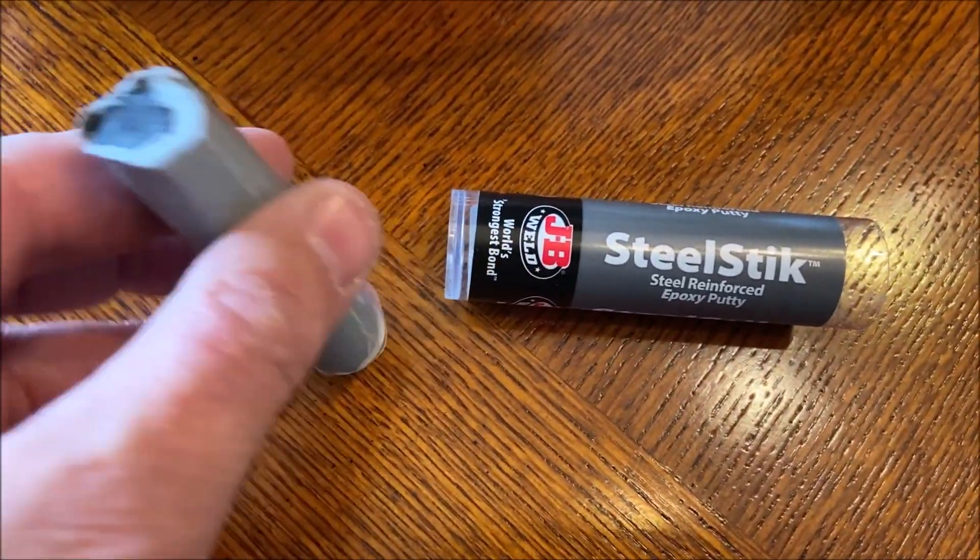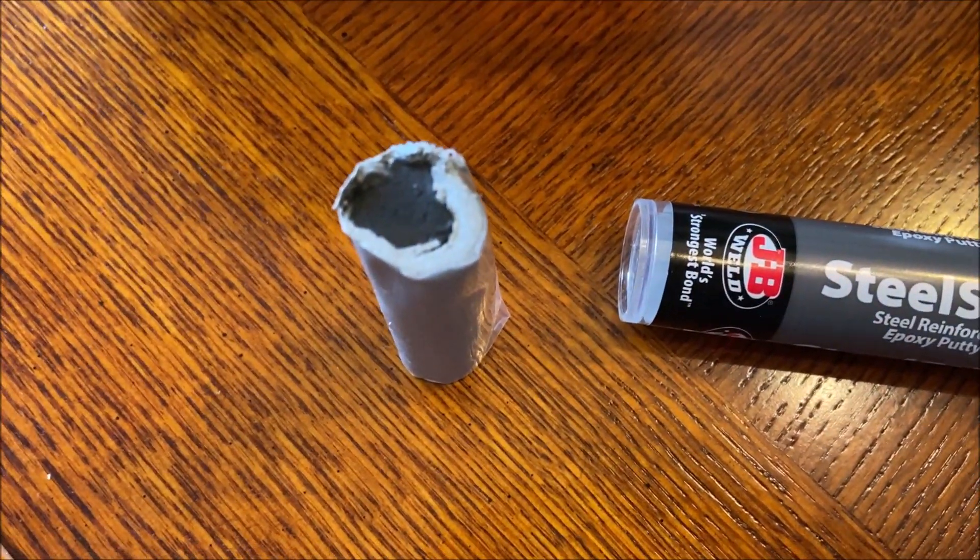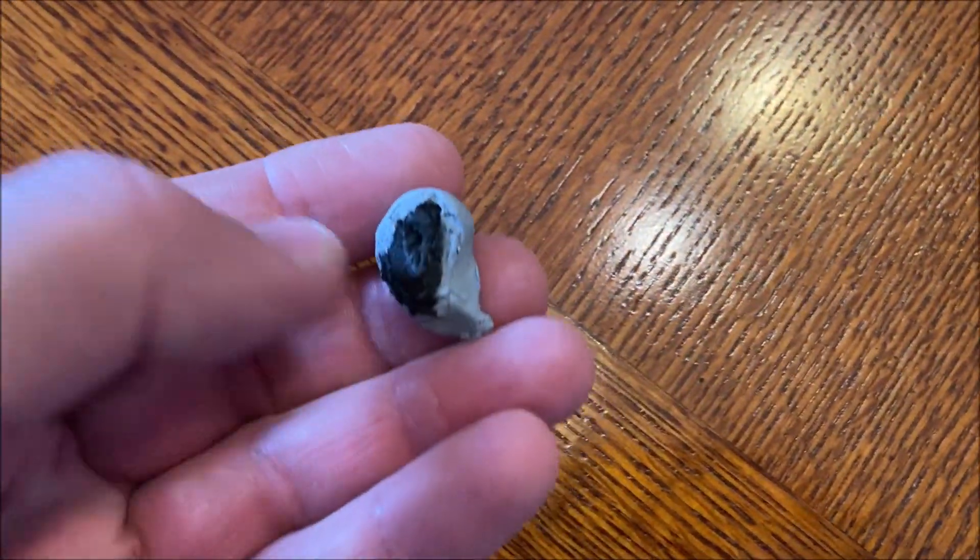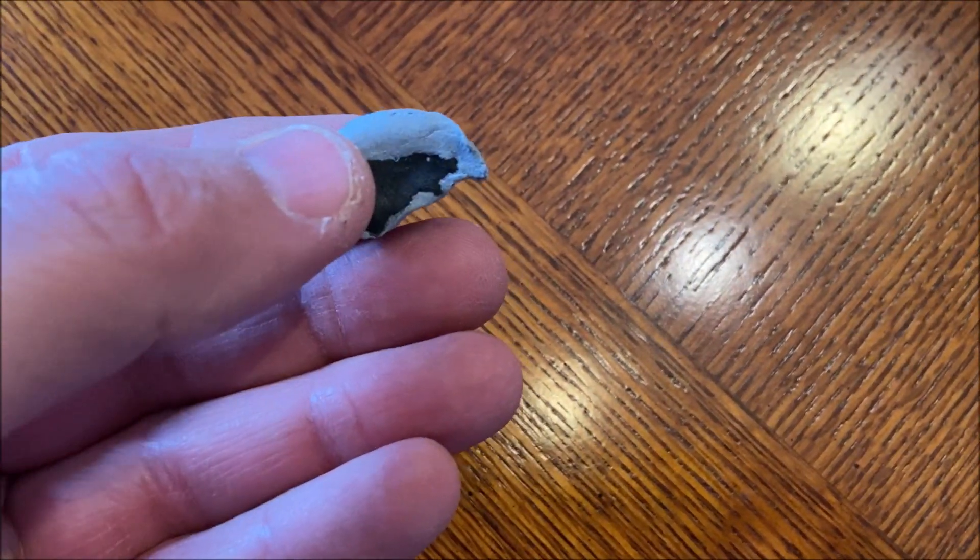When you take the little cap off the steel stick, it looks like a round Fig Newton. I just cut a little chunk of material off with a knife. Now I'm going to knead this together until it's all the same color.